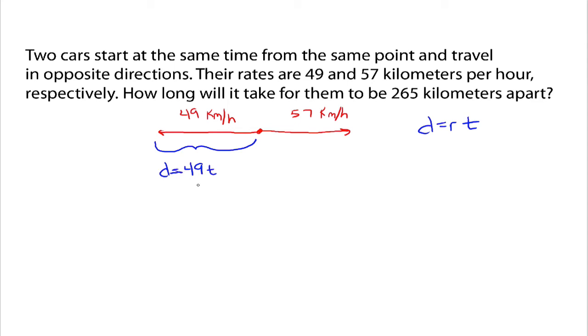Because distance is equal to rate times time. Well, we don't know the time yet, right? So, the distance is just 49 times whatever the time would be. That would be that distance. This distance over here is 57T. Everybody see that?